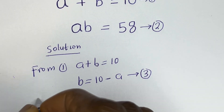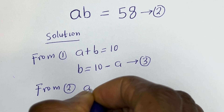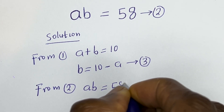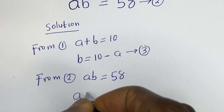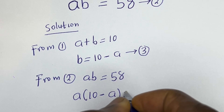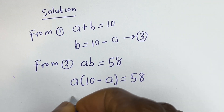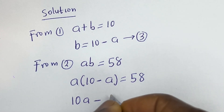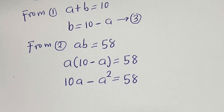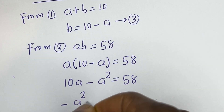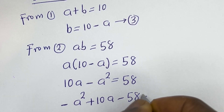Also, from equation 2, a times b is equal to 58. We know that b is equal to 10 minus a, so a times bracket (10 minus a) is equal to 58. Let's open the brackets: a multiplied by 10 is 10a, minus a multiplied by a is a squared, so 10a minus a squared is equal to 58. This gives us minus a squared plus 10a minus 58 is equal to 0.